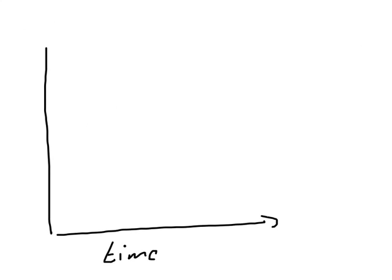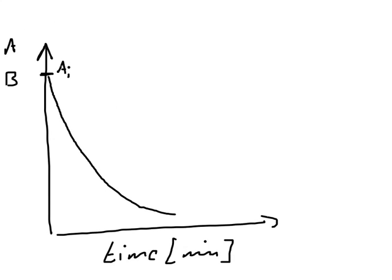Let's draw what's happening. We have a time axis here — in the right units, minutes or something like that — and here we have our A and potentially also our B. For A, we start with our initial concentration, and for a first-order reaction we will see something like this going down.